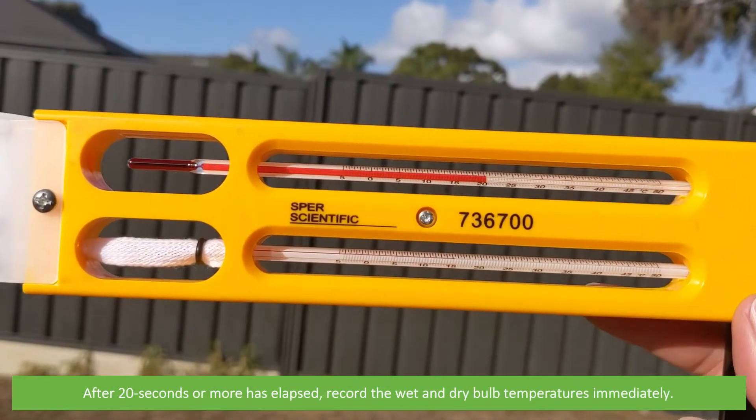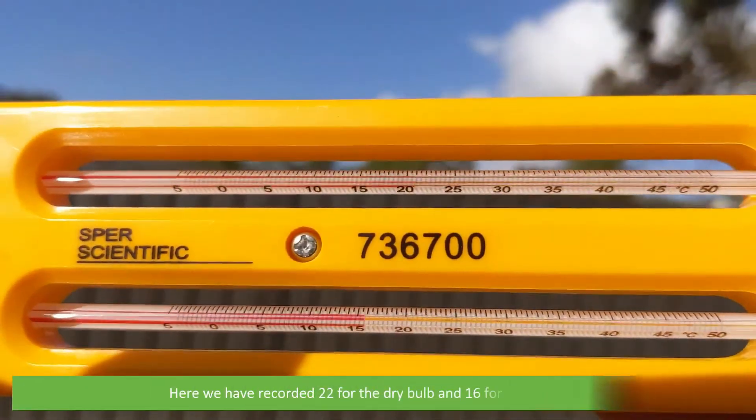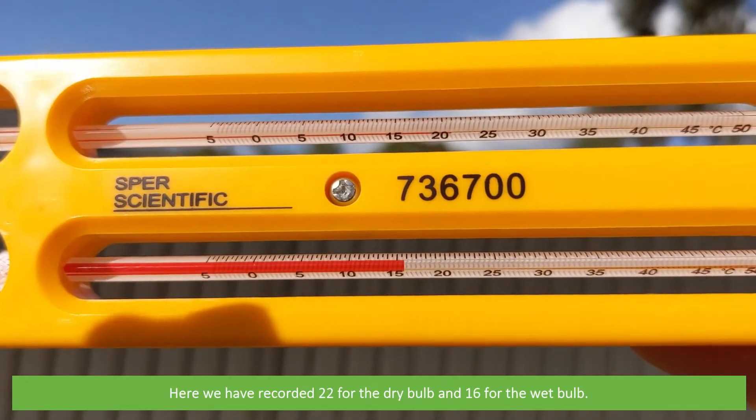After 20 seconds or more has elapsed, record the wet and dry bulb temperatures immediately. Here we've recorded 22 degrees for the dry bulb and 16 degrees Celsius for the wet bulb.